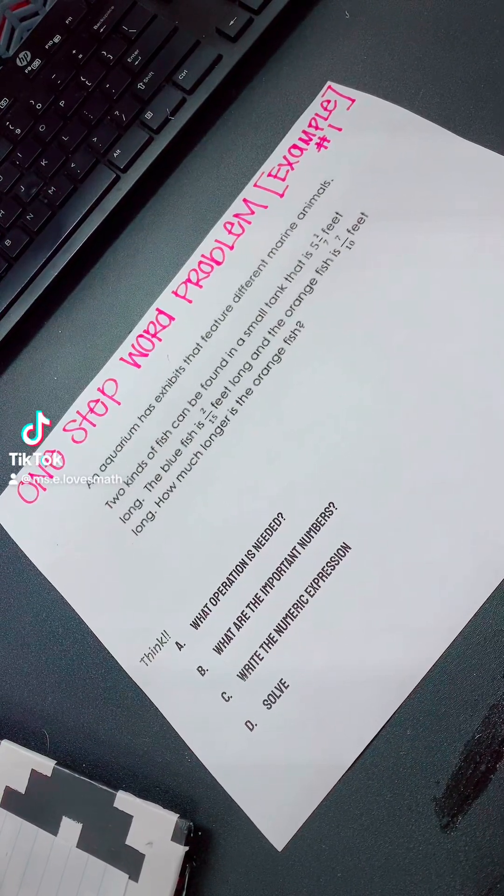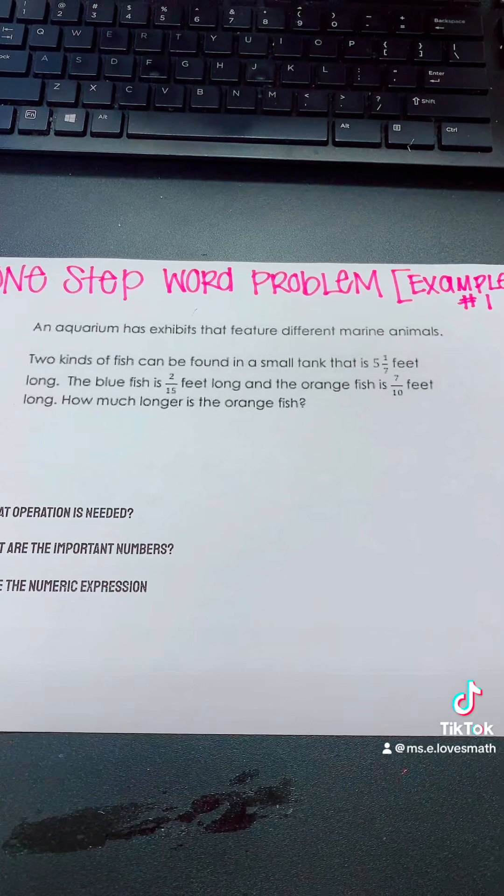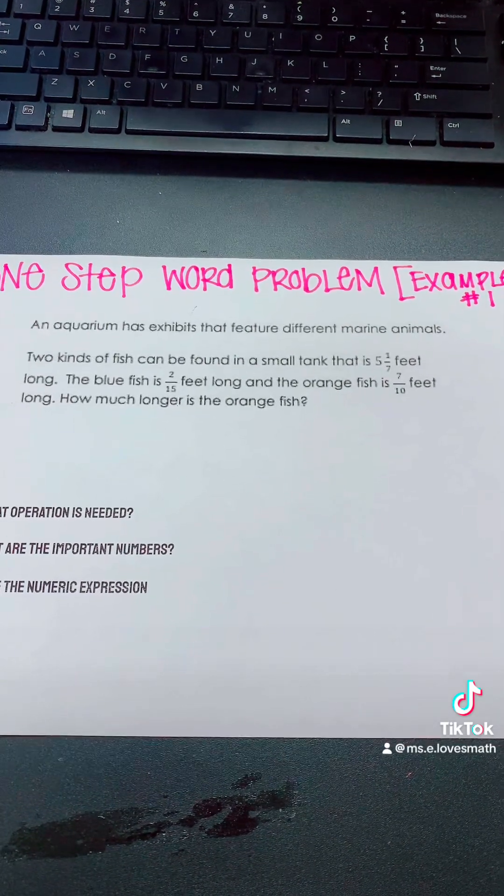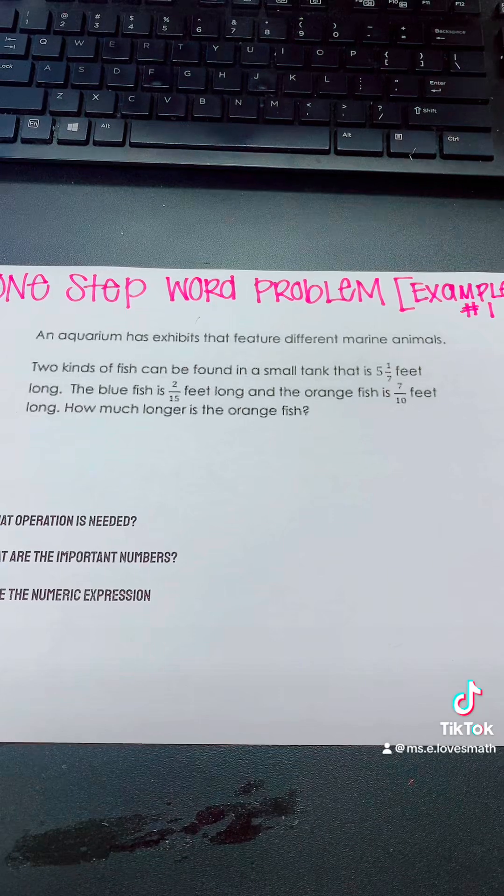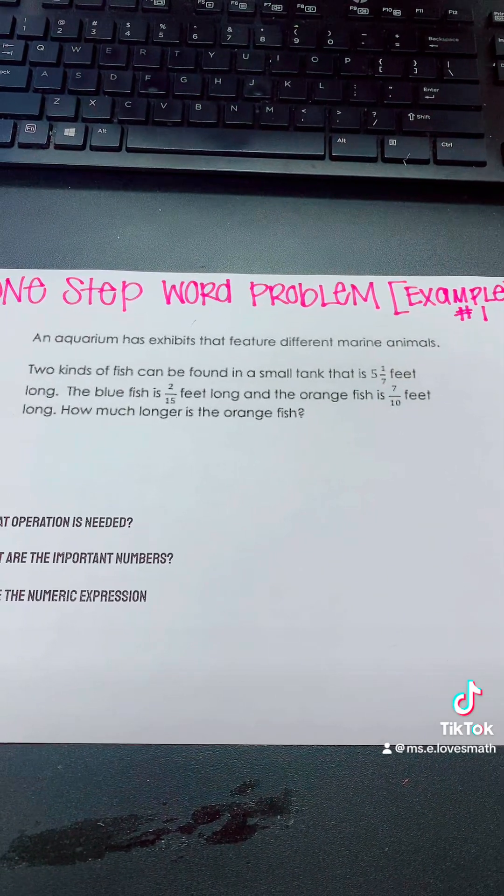One-Step Word Problems Example 1. An aquarium has exhibits that feature different marine animals. Two kinds of fish can be found in a small tank that is 5 1/7 feet long.